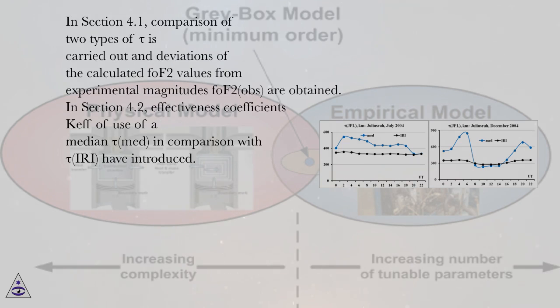In section 4.1, comparison of two types of tau is carried out and deviations of the calculated FOF2 values from experimental magnitudes FOF2 OBS are obtained. In section 4.2, effectiveness coefficients Kef of use of a median tau MED in comparison with tau IRI have been introduced.